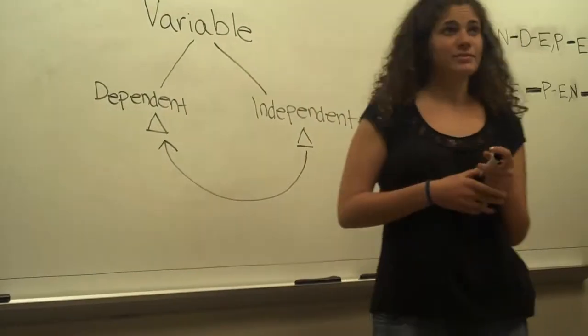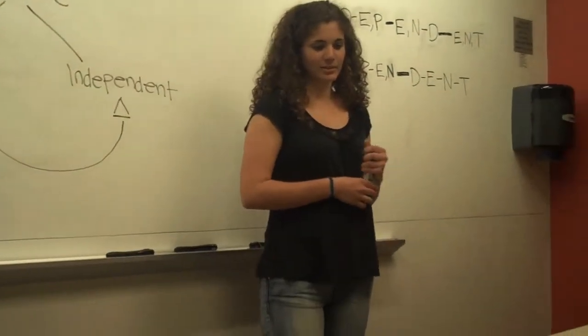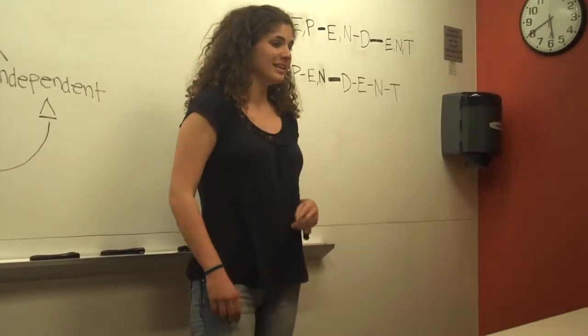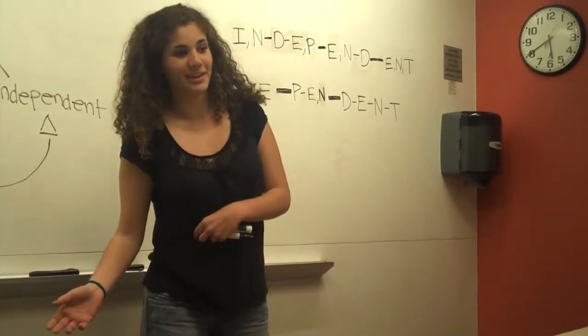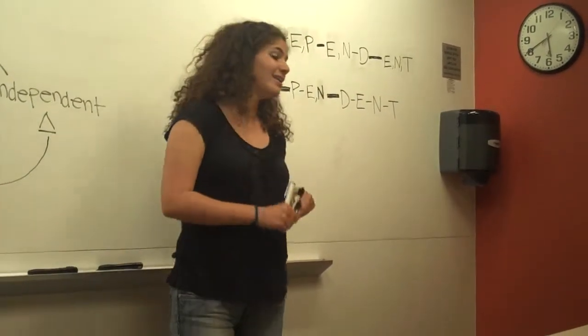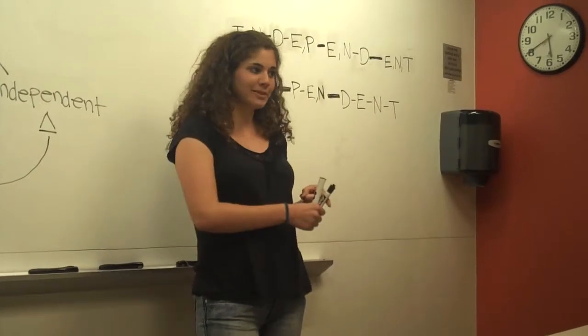Let's see, what are some other examples of dependent and independent variables? The first one that comes to mind for me is the amount of sleep I get at night determines how tired I am in the morning. So I can control if I go to bed early or if I stay up watching one more TV show.